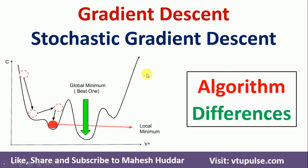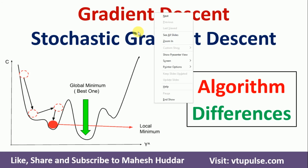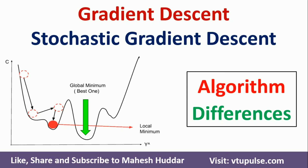Welcome back. In this video, I will discuss the gradient descent algorithm and the stochastic version of gradient descent algorithm, and then we will discuss the difference between these two algorithms. In the previous video, I have already discussed what is gradient descent and how the delta rule is derived with respect to gradient descent — the link for that video is given in the description below. Now, we will continue with the gradient descent algorithm.